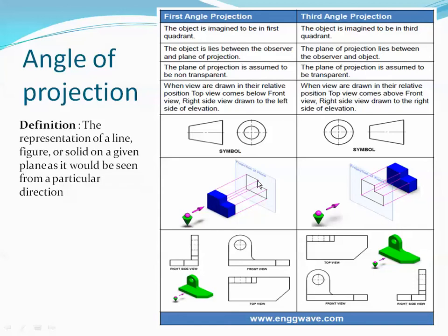In first angle projection, the object lies between the observer and the plane of projection. In third angle projection, the plane of projection lies between the observer and the object. In first angle projection, the plane is assumed to be non-transparent — so if the observer looks from this direction, they can't see anything through it. In third angle projection, the plane is assumed to be transparent.